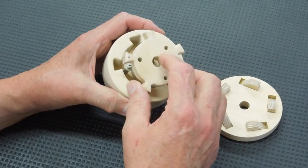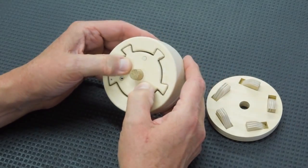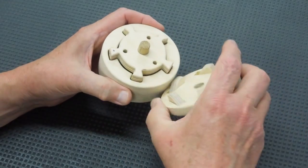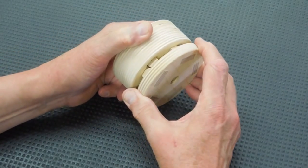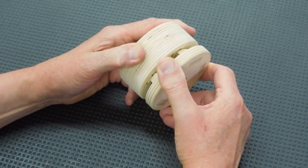This can be used anywhere where you want to have a freewheel in one direction and drive in the other, such as for a winding mechanism.